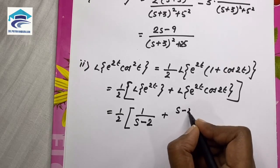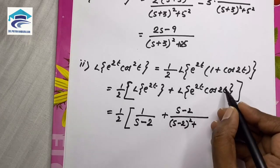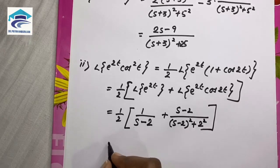s minus a. A here is 2. So s minus 2 by s minus 2 the whole squared plus b here is 2, so 2 squared. This is a direct formula.